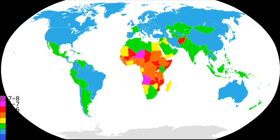Four types of population planning goals pursued by governments can be identified: increasing the overall population growth rate, and reducing the overall population growth rate.